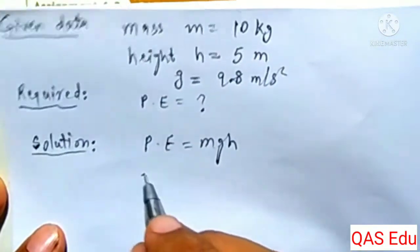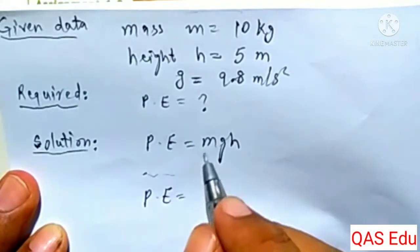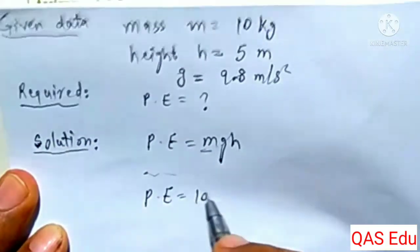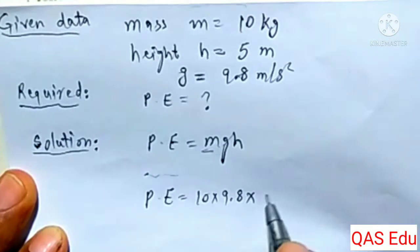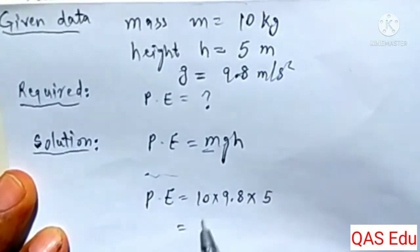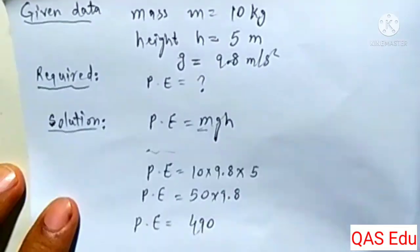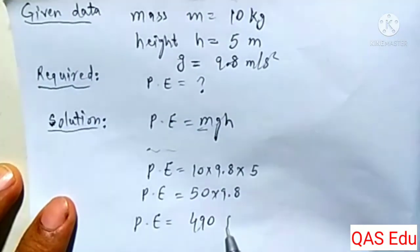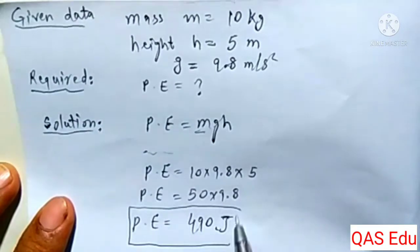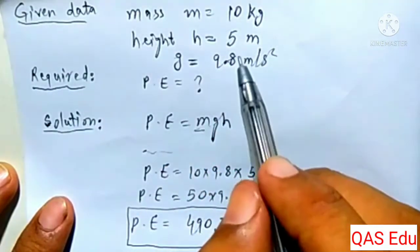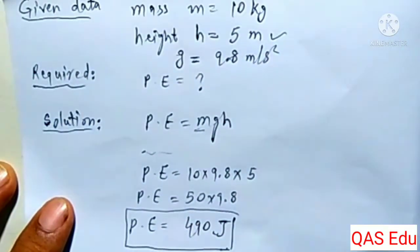Putting in the values: Potential Energy equals mass 10 kg multiplied by g 9.8 multiplied by height 5 meters. That gives 10 times 5 equals 50, times 9.8 equals 490 joules. So the potential energy of a 10 kg object raised 5 meters is 490 joules.